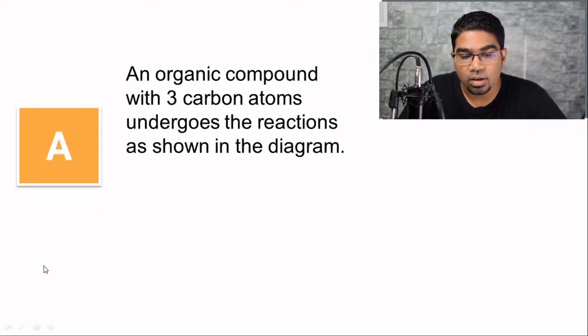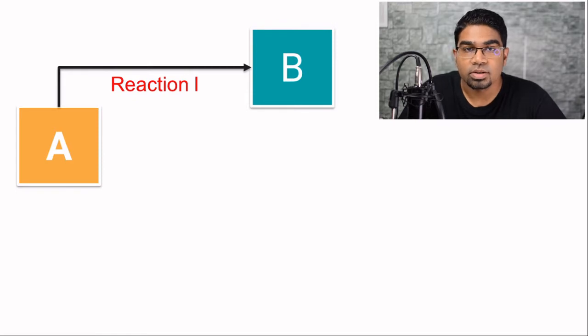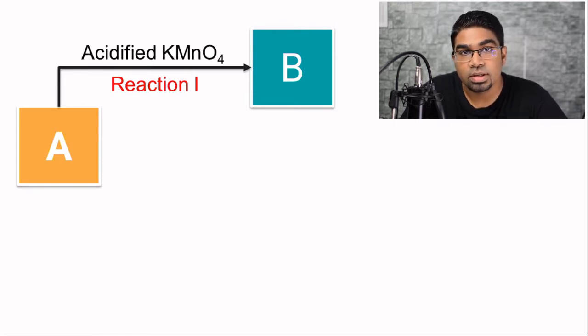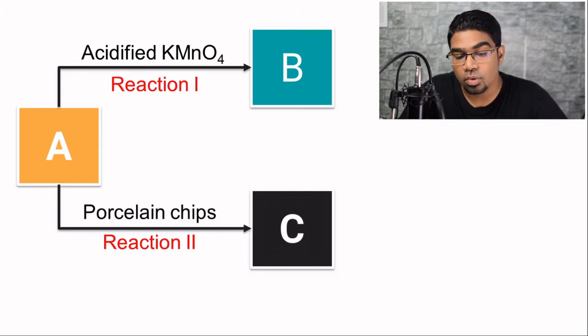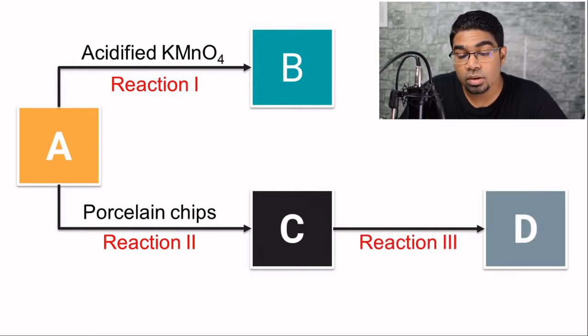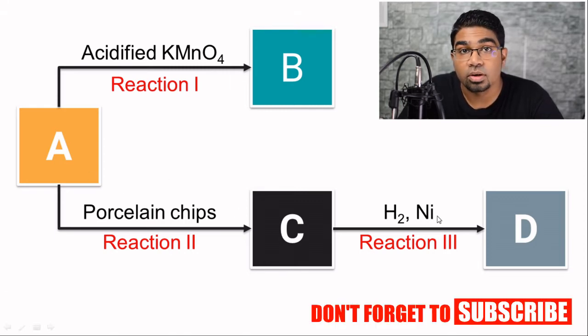Let's say we have a chemical compound A, and this organic compound with three carbons undergoes reactions as shown in the diagram. Identify all compounds and reactions. So A undergoes reaction 1 to become B. In reaction 1, acidified potassium manganate 7 — or acidified potassium permanganate solution — is used. There is also reaction 2, in which porcelain chips are used. After compound C is formed, compound C is reacted in reaction 3, where hydrogen gas and nickel are used. We need to identify all these compounds based on the information given.